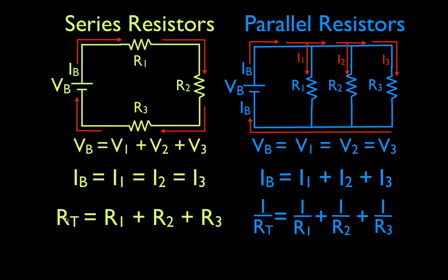For parallel resistors it's a little more complicated — there's this equation which says that one over the total resistance is equal to one over R1 plus one over R2 plus one over R3, and then you can use that equation to calculate the total resistance. I'm not going to show how to do that right now; we'll do that in a separate video that focuses on parallel resistors. I just want to point out that this is the equation for calculating the equivalent resistance for resistors in parallel.